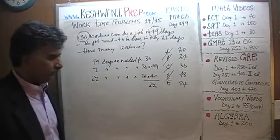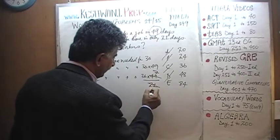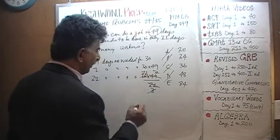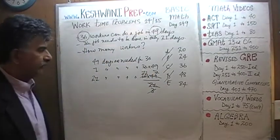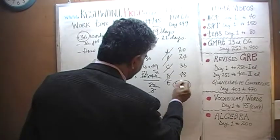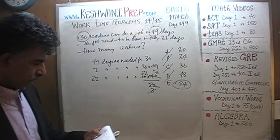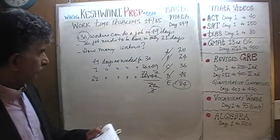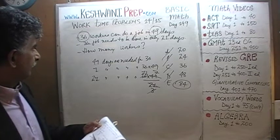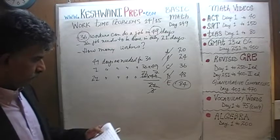That's it. Divide top and bottom by 7: 49 becomes 7, 21 becomes 3, and it becomes 12 times 7. The answer is 84.